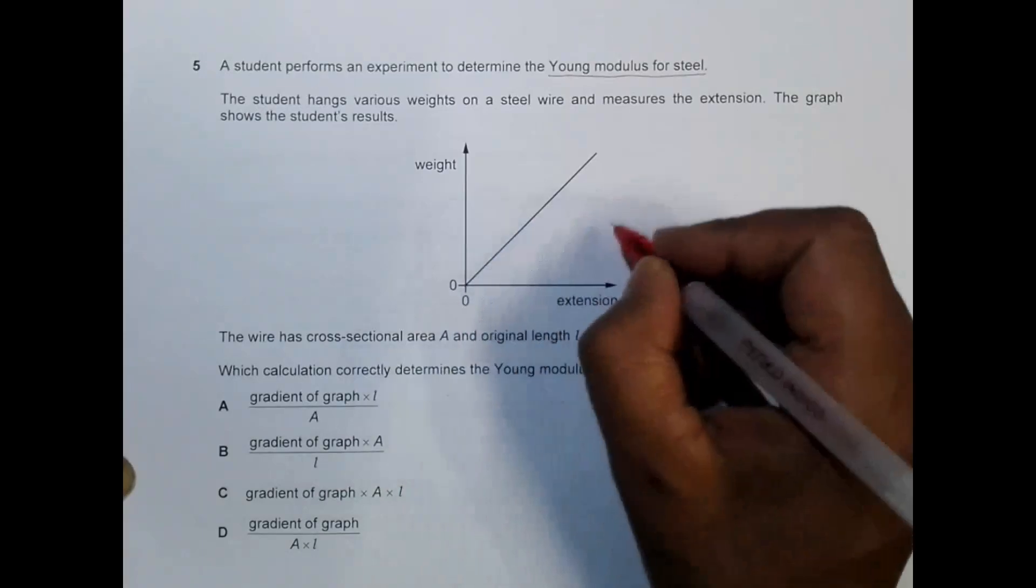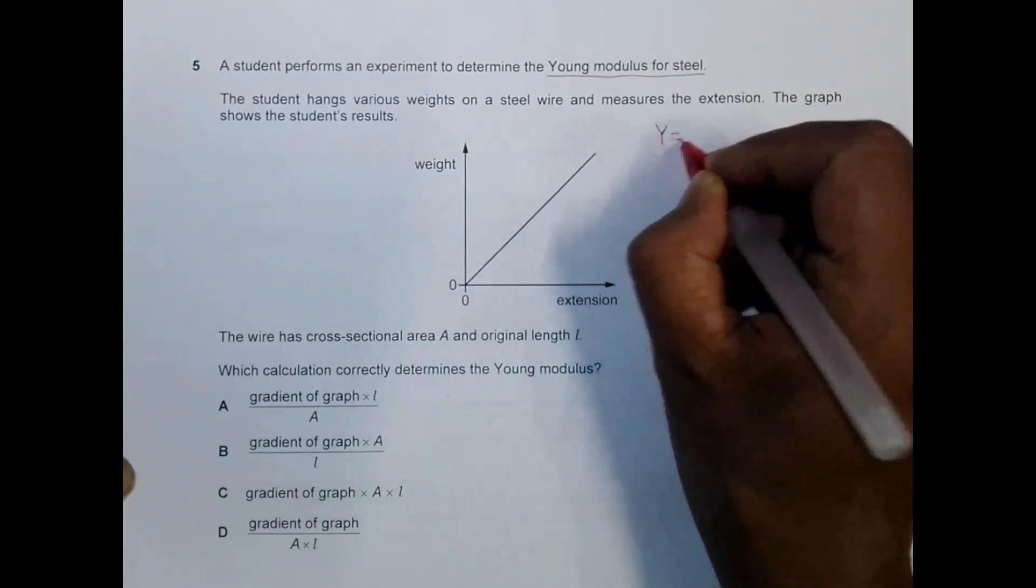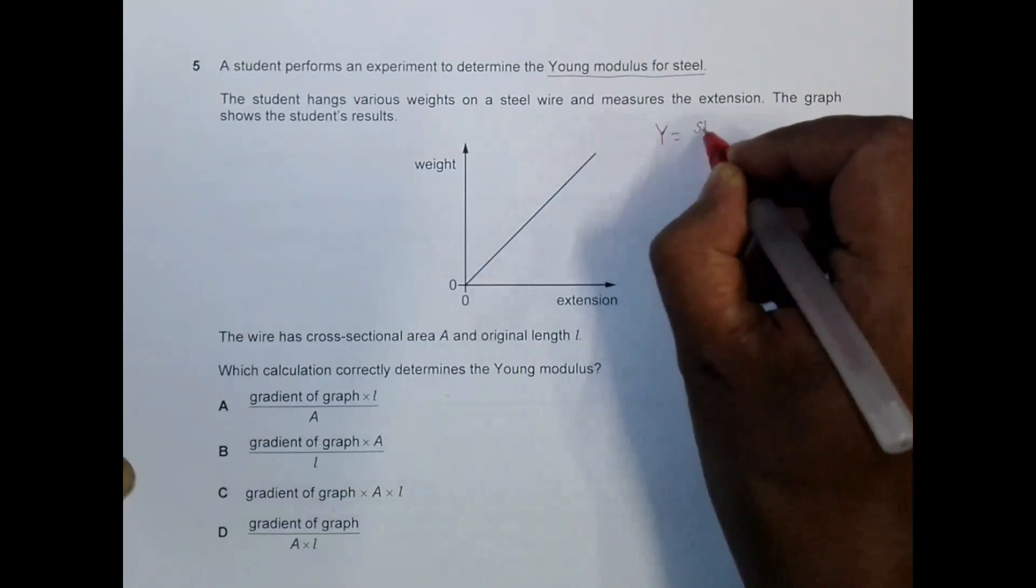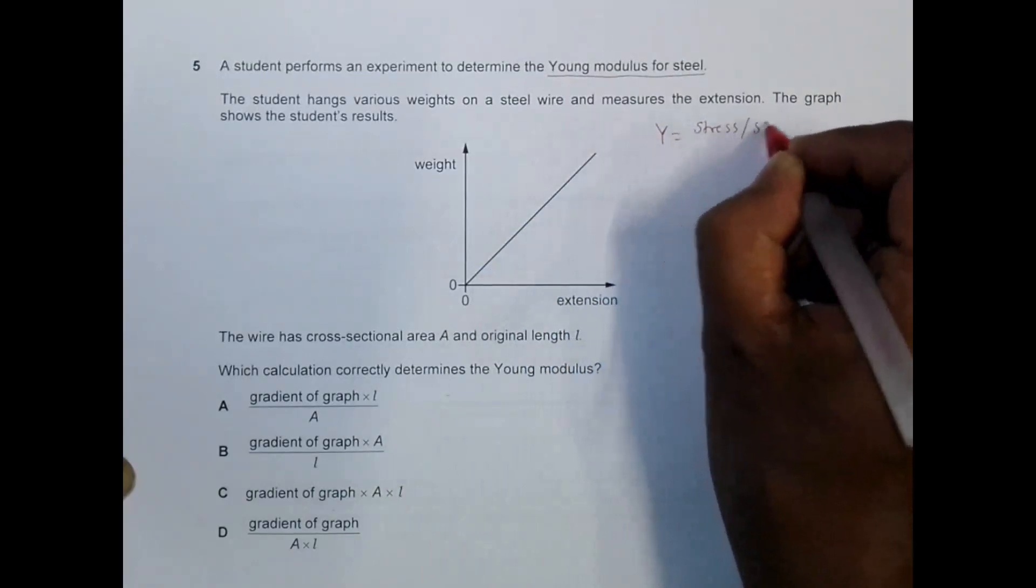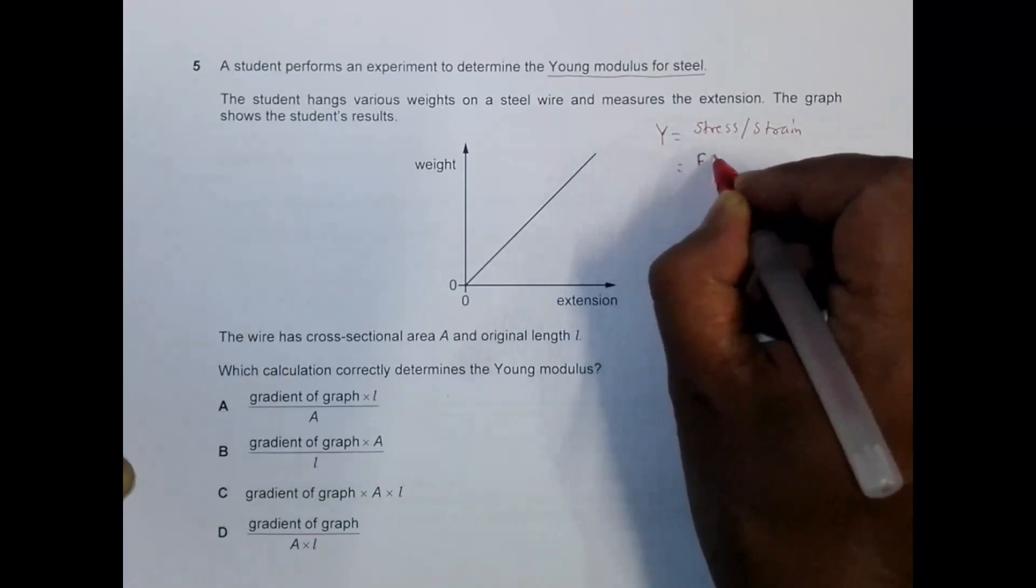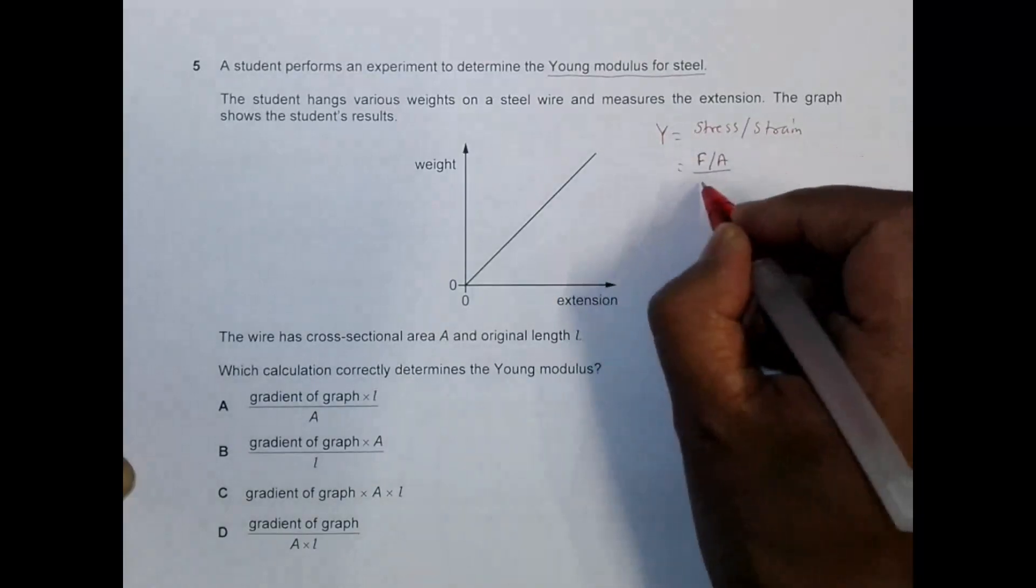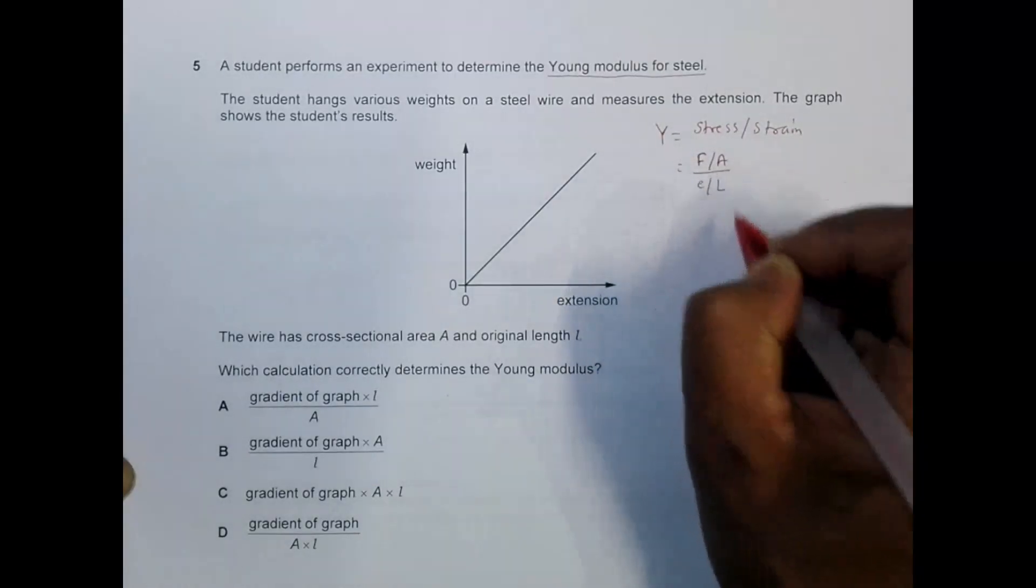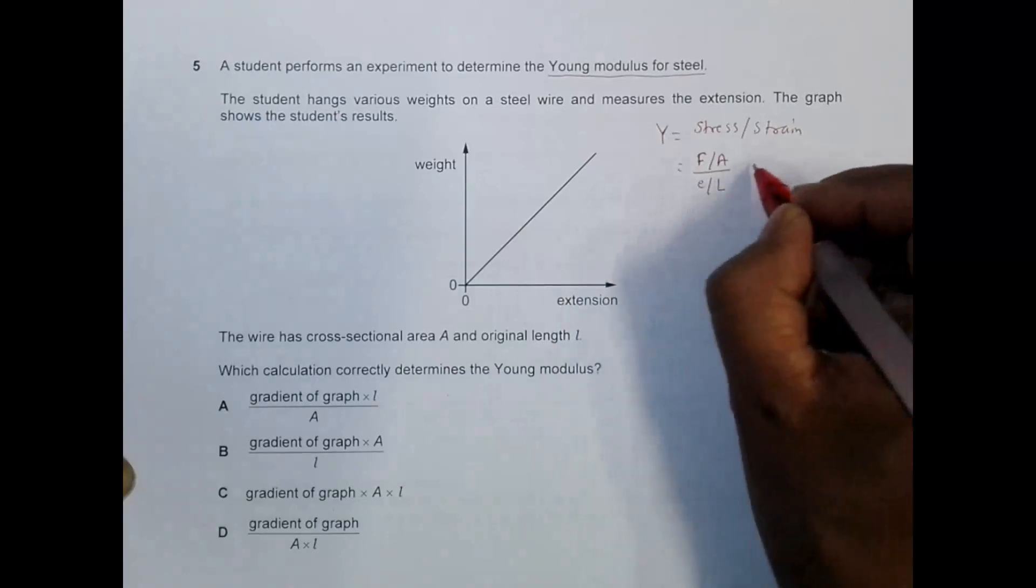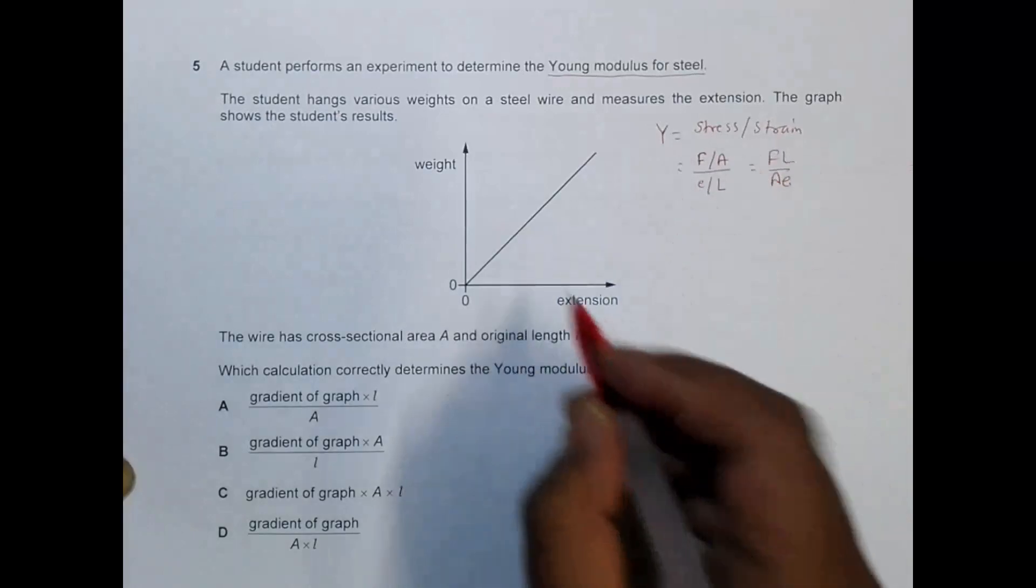First, remember that the formula for Young's modulus is stress divided by strain. Stress equals the deforming force or restoring force divided by cross-sectional area A, and strain is extension e divided by the original length L. So it equals FL divided by Ae.